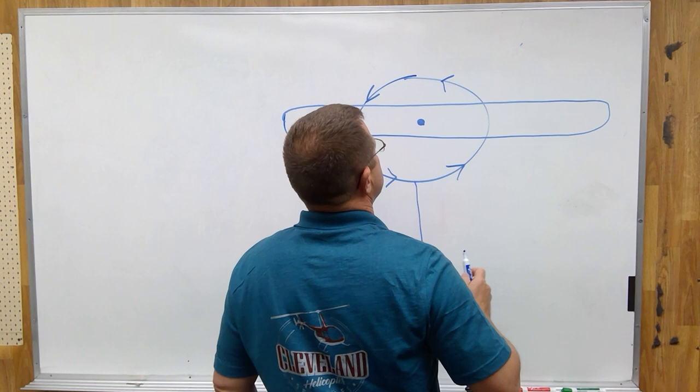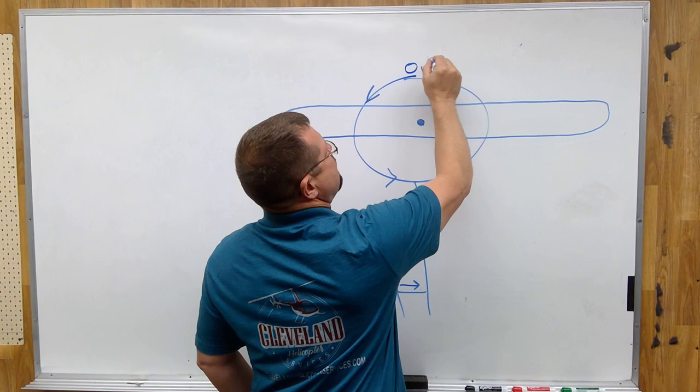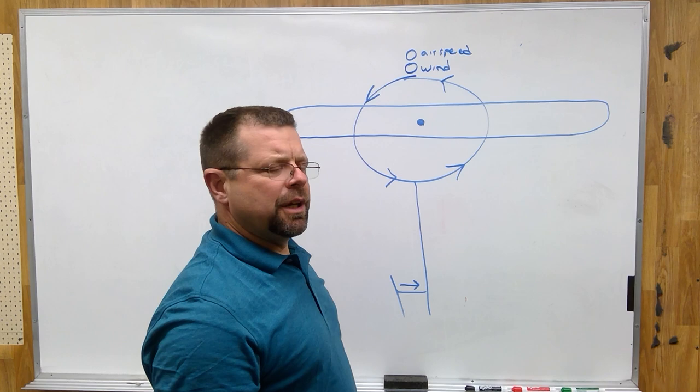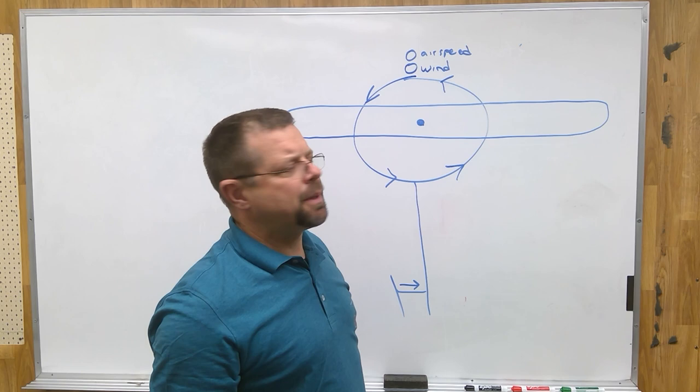Now if we have zero wind and zero airspeed, there is no dissimetry of lift. There is equal lift all through the rotor system with zero wind and zero airspeed.